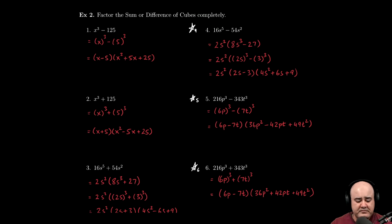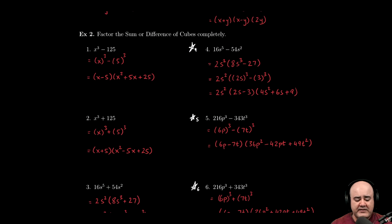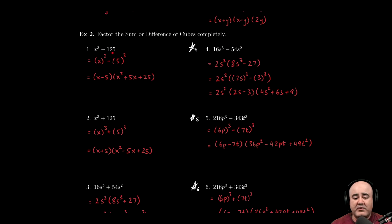So, first thing is always consider whether you can rewrite this as a sum or difference of cubes. So we have x cubed minus 125. Well, I can rewrite this as a simple cube, it's just the cube of x.